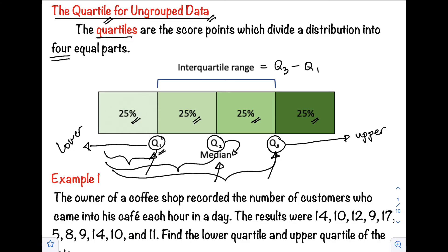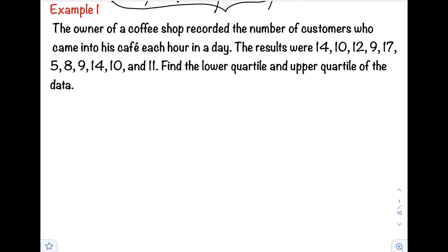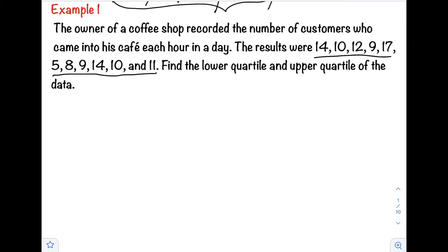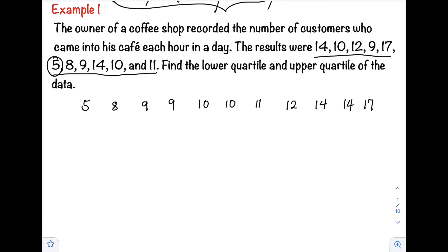Let's have Example 1. The owner of a coffee shop recorded the number of customers who came into his café each hour in a day. We are asked to find the lower quartile and upper quartile of the data. Step one is to rearrange the results in ascending order. As you can see, 5 is our least value, followed by 8, then 9, then another 9, then we have two 10s, then 11, 12, 14, 14, and 17.